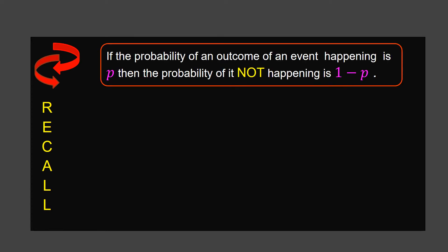As we all know, something may happen or it may not happen. When we combine these two probabilities, it will always add up to 1. So if the probability of an outcome of an event happening is P, then the probability of it not happening is 1 minus P.